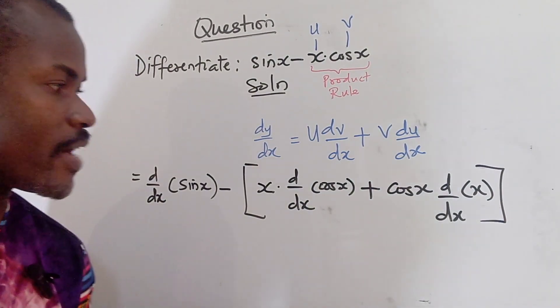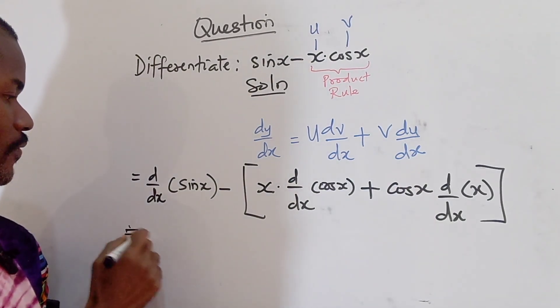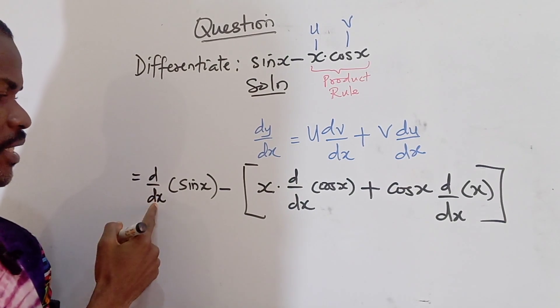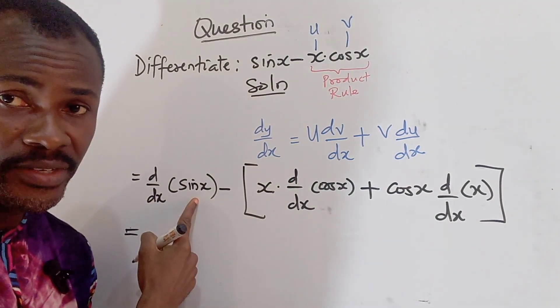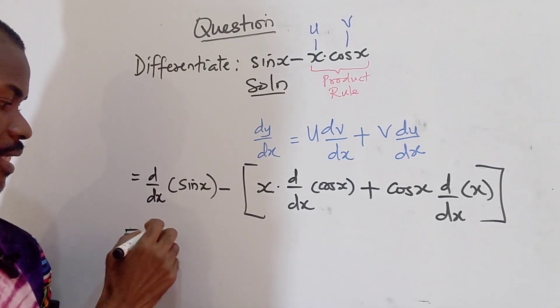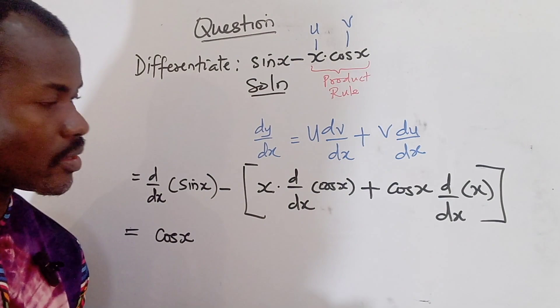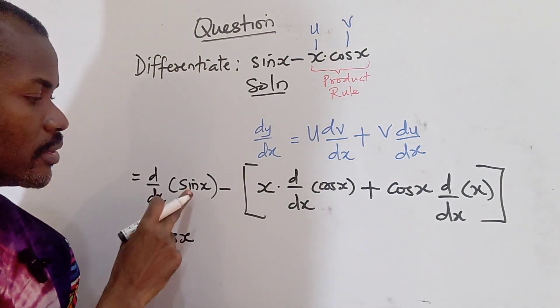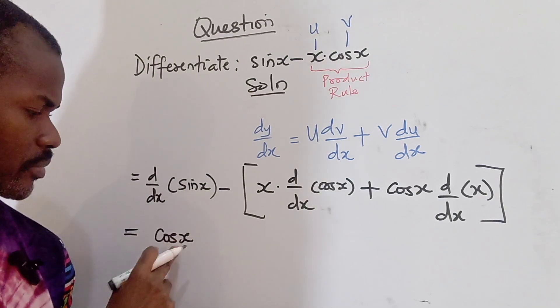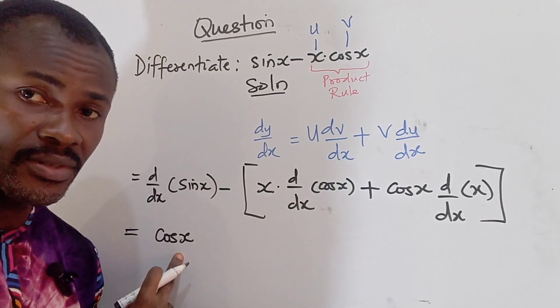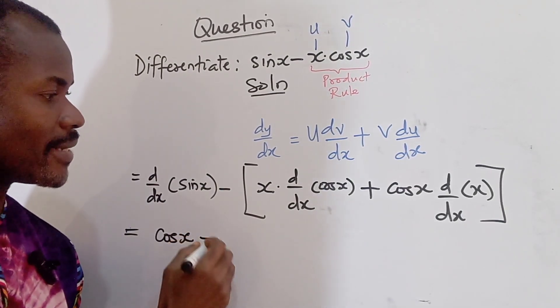So that is the expression we have for all this if we are to differentiate it. Now we can go further to simplify. So this is going to give us, now, the standard derivative of sine x gives us cos x. You can consult your textbooks. Differentiating sine x gives us cos x.